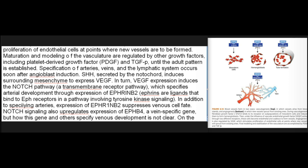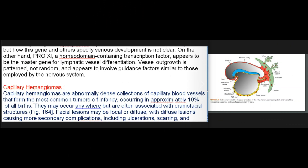Specification of arteries, veins, and the lymphatic system occurs soon after angioblast induction. SHH, secreted by the notochord, induces surrounding mesenchyme to express VEGF. In turn, VEGF expression induces the Notch pathway, a transmembrane receptor pathway, which specifies arterial development through expression of EPHRINB2. EPHRINs are ligands that bind to EPH receptors in a pathway involving tyrosine kinase signaling. In addition to specifying arteries, expression of EPHB4 suppresses venous cell fate. Notch signaling also upregulates expression of EPHB4, a vein-specific gene, but how this gene and others specify venous development is not clear. PROX1, a homeodomain-containing transcription factor, appears to be the master gene for lymphatic vessel differentiation. Vessel outgrowth is patterned, not random, and appears to involve guidance factors similar to those employed by the nervous system.